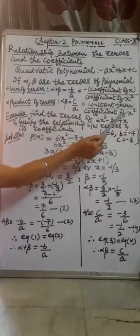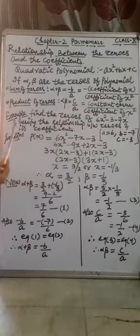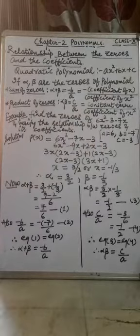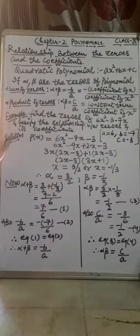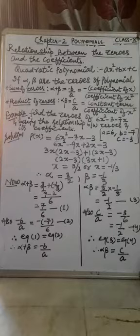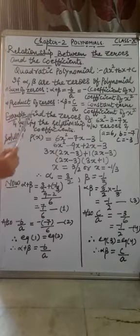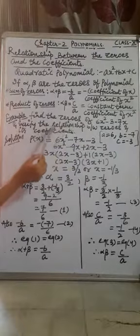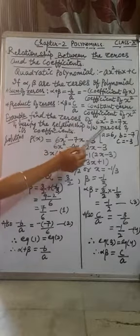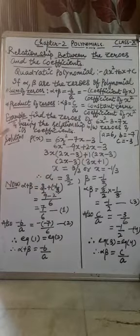Here c is the constant term and a is the coefficient of x squared. On the basis of these two relations, we will learn them with the help of one example. Suppose: find the zeros of this polynomial and verify the relationship between the zeros and its coefficient. This example is taken from your NCERT book only.